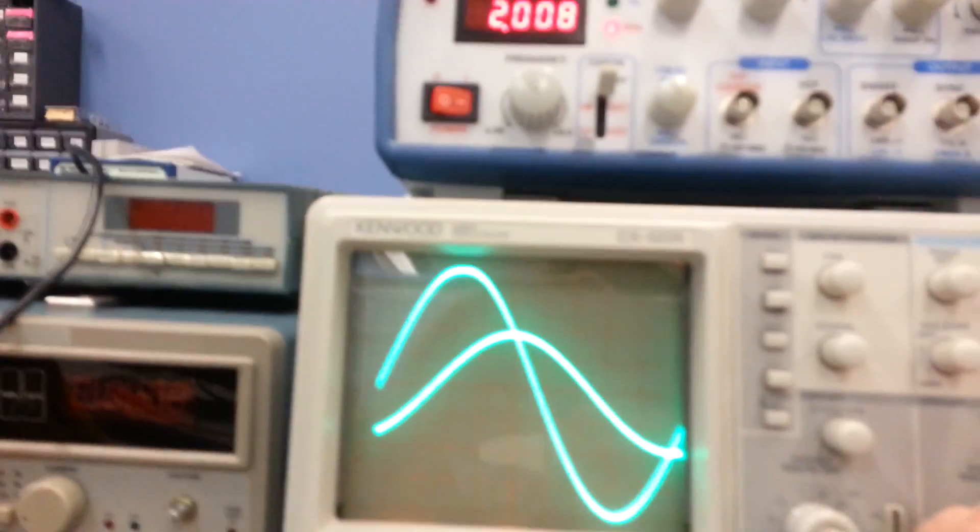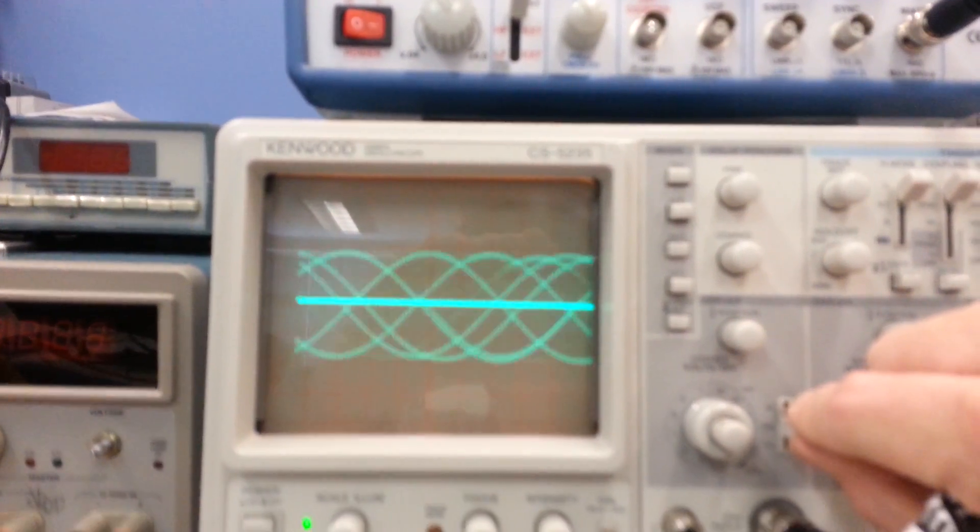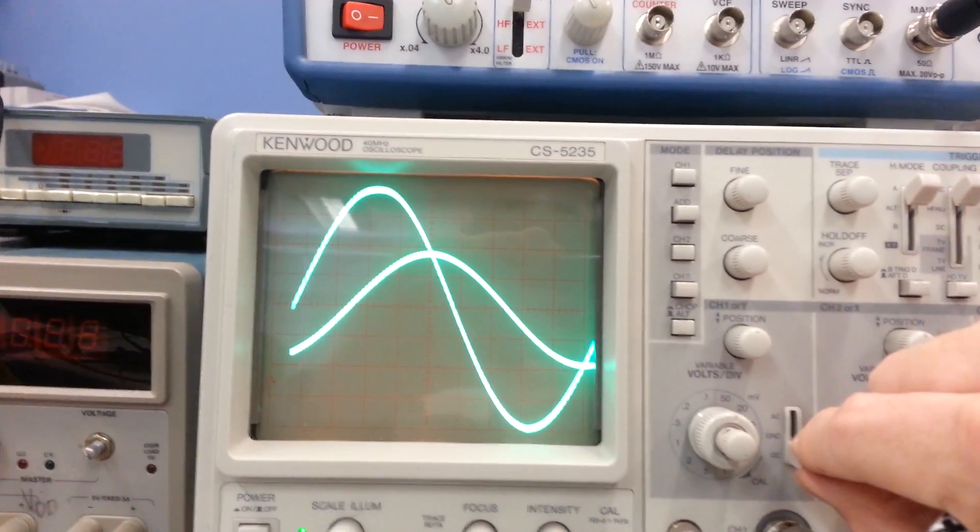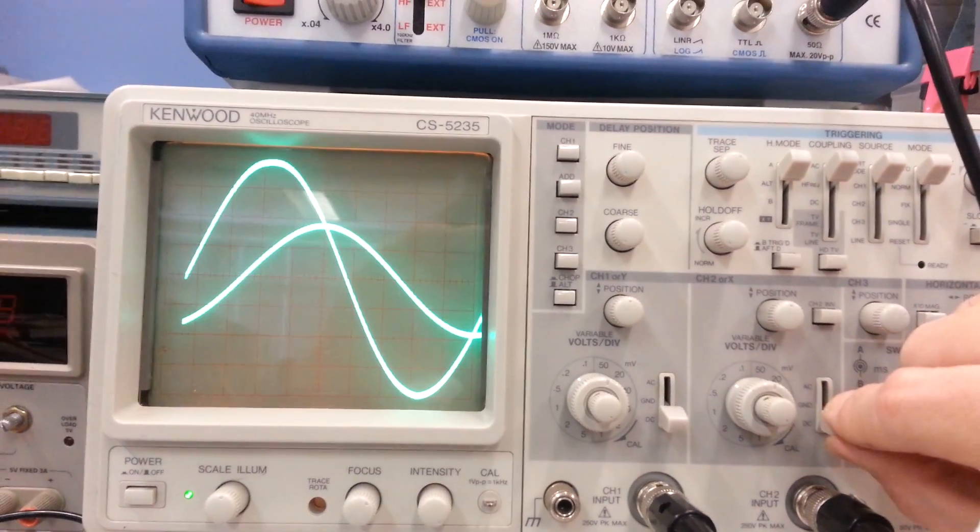All right, let's take a look on the scope. And on the scope, we can clearly see channel 1, it's the larger waveform. When I go to ground on channel 1, I lose my trigger. And channel 2, that's the voltage across the cap.